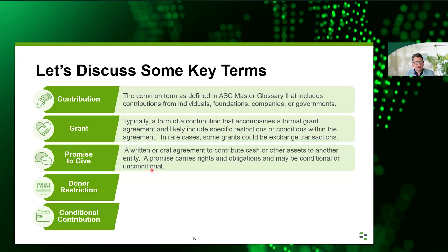A promise to give is really a written or oral agreement to contribute cash or other assets to another entity. These types of promises should carry rights and obligations — the not-for-profit has a right to receive those promised funds in the future, and the individual, foundation, or corporation has an obligation to commit. Through state laws, these are often legally enforceable. This is where folks from the private company world have a hard time understanding not-for-profit GAAP, because you can book revenue just based on a promise — as long as it's documented, we can book that revenue as soon as the promise is made.